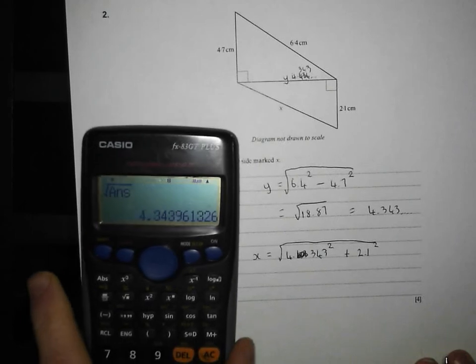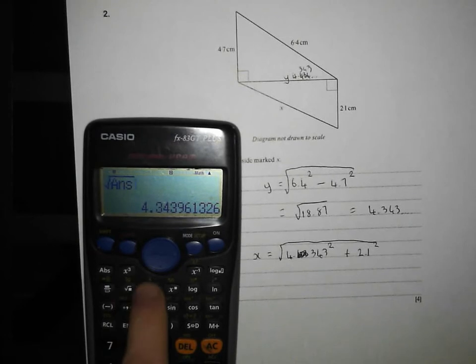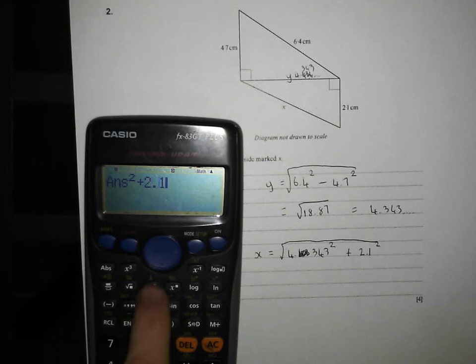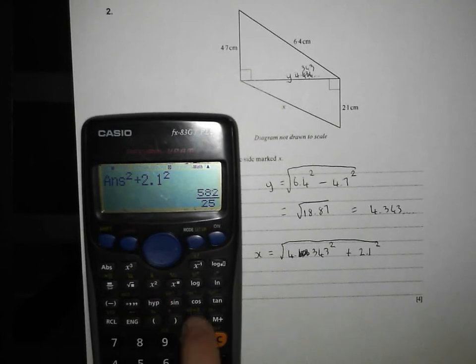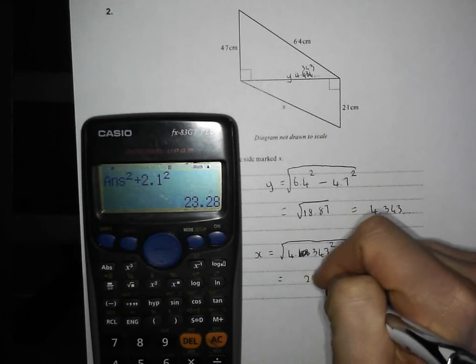Now if you're smart about this, you've already got that big long number already in your calculator, so you don't have to lose any accuracy here. So we can just square that, plus 2.1 square that, and press equals, and we get, and we've not lost any accuracy whatsoever, 23.28.